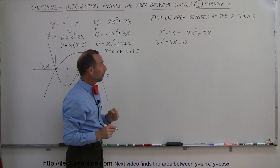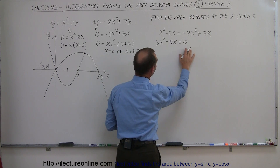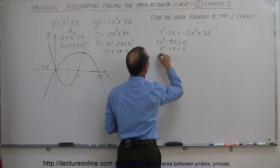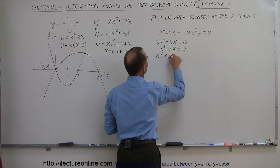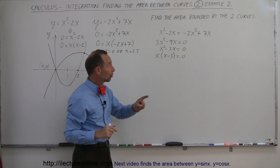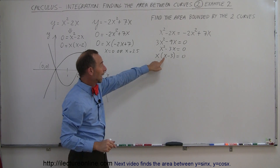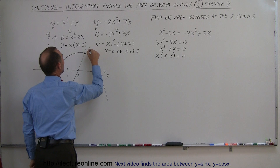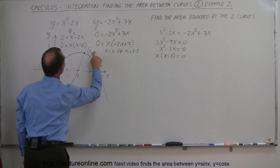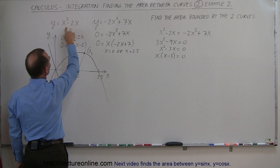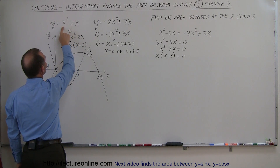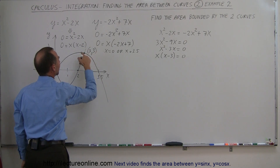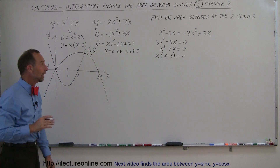To solve that for x, factor out x and divide both sides by 3, giving x squared minus 3x equals zero, or x times (x minus 3) equals zero. This means the two functions cross at x equals zero and x equals 3. So this intersection point is at x equals 3, and plugging 3 into the first equation gives 9 minus 6 equals 3, so the intersection point is (3, 3).